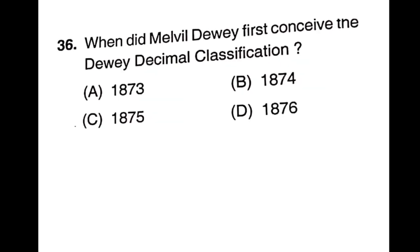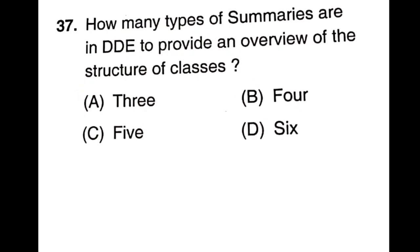Question 36: When did Melvil Dewey first conceive the Dewey Decimal Classification? Options: 1873, 1874, 1876, 2014 — 1873 is the right answer. Question 37: How many types of summaries are in the Dewey Decimal Classification to provide an overview of the structure? Options: 3, 4, 5, 6 — the answer is 3, which is the right answer: three levels of summarization.